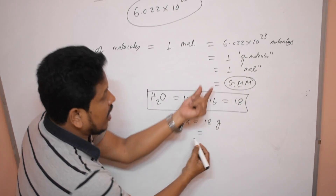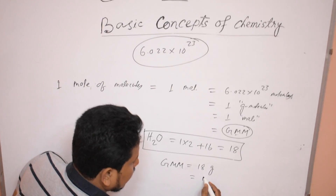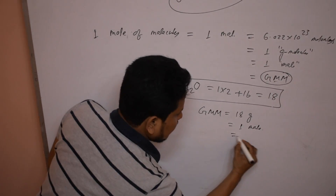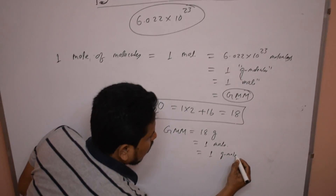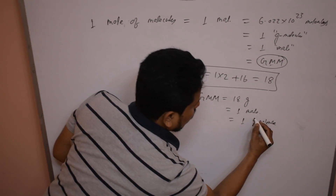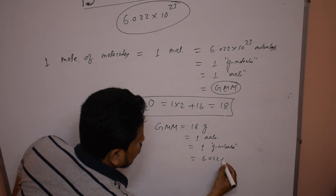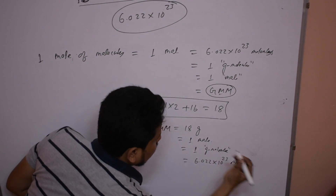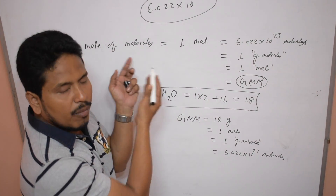So the molecular mass of water is 18. Gram molecular mass means molecular mass 18 expressed in grams — that is 18 gram. Just the gram unit is added to the molecular mass, and that is called gram molecular mass. Gram molecular mass is 1 mole — that is 1 mole per gram, also called 1 gram molecule. One gram molecule of water contains Avogadro's number of molecules of water. This is the mole concept related to molecules.